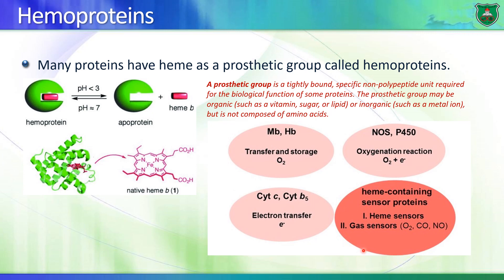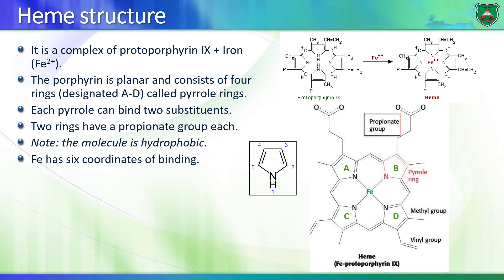Heme groups are also involved in the electron transport chain, and other proteins that function as sensors where heme plays a major role. Heme is an organic molecule composed of four pyrrole rings designated A, B, C, and D. Overall it is a cyclic molecule with branches extending out, including methyl groups, vinyl groups, and charged propionate groups.